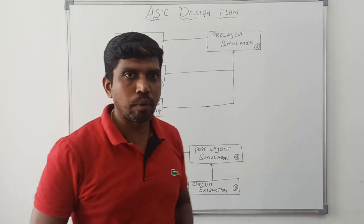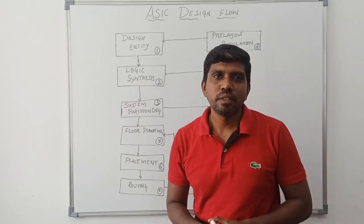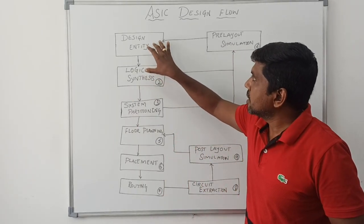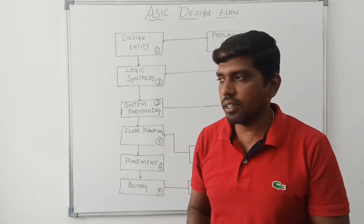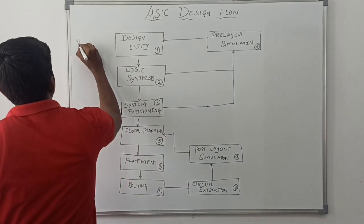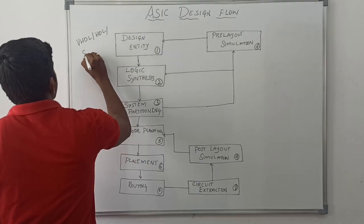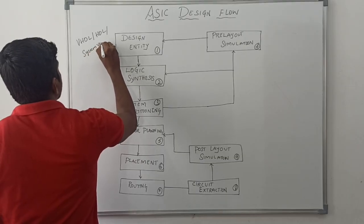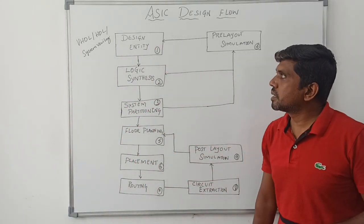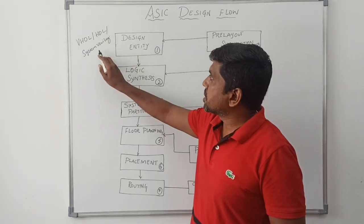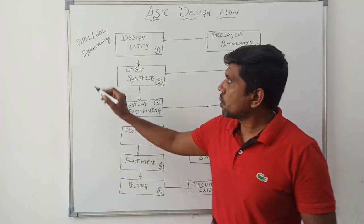The first step is design entity. Design entity is the stage where the micro architecture is implemented in a hardware description language like VHDL, HDL, and SystemVerilog. The stage where micro architecture is implemented in a hardware description language is called design entity.